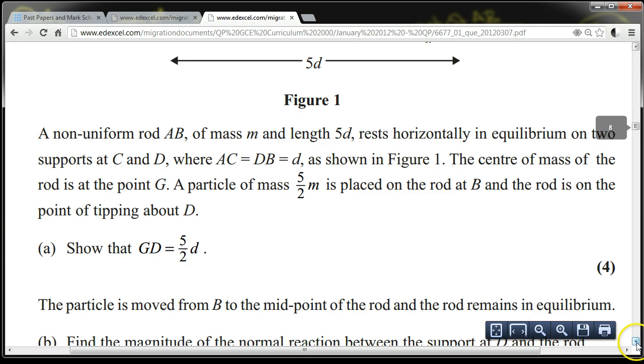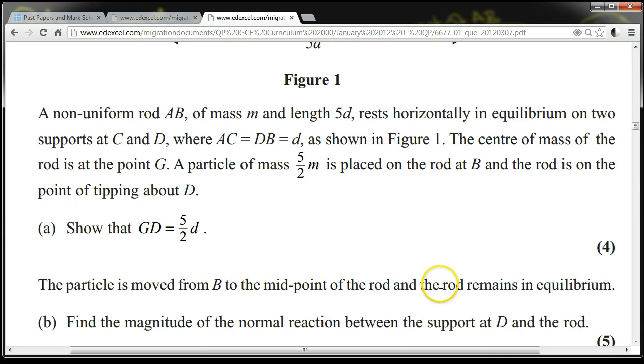The particle is moved from B to the midpoint of the rod, and the rod remains in equilibrium. Find the magnitude of the normal reaction between the support at D and the rod.